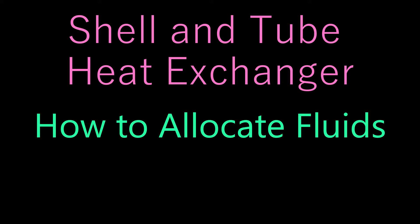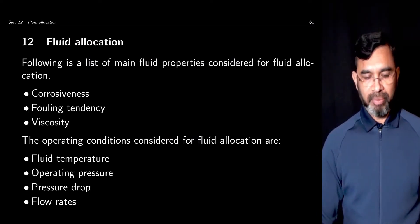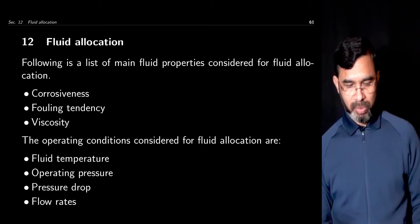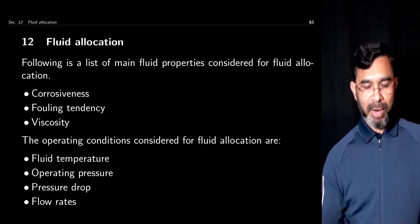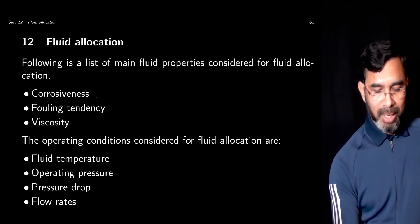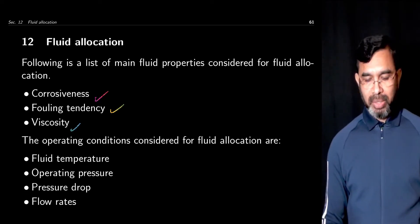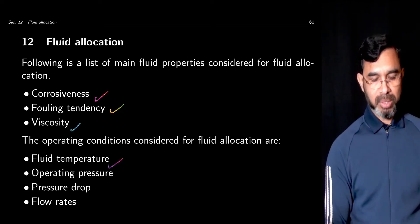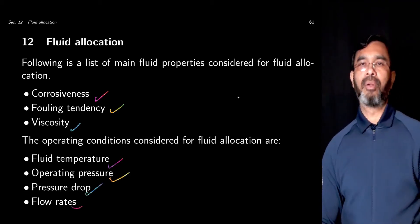In this session we talk about how to allocate fluids on the shell side and on the tube side. For doing that we consider different fluid properties and also different operating conditions. Among the fluid properties the three mainly considered are corrosiveness, fouling tendency, and viscosity. The main operating conditions considered are the temperatures of the two streams, the operating pressure, the pressure drop, and the flow rates.